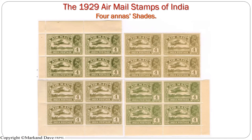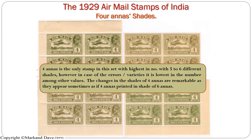Now we will talk about the four annas. The other values have shades — lighter and darker — but they are not as distinctive as the four annas. The four annas has multiple colors, nearly five to six. The changes in shades of the four annas are so remarkable that sometimes they appear as if the four annas was printed in the shade of the six annas. Altogether there is a good shade range variety in the four annas.